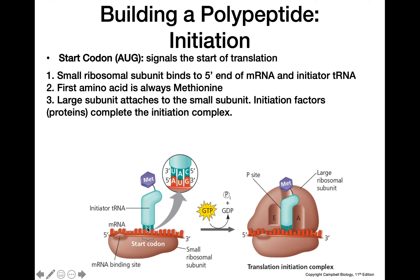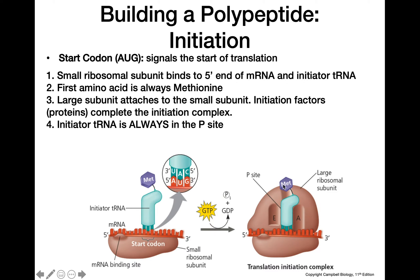After we have the initiator tRNA bound to the start codon, the large ribosomal subunit will come in and bind to the small subunit. We'll have several initiation factors that are going to help complete this initiation complex. Once the large ribosomal subunit attaches, the initiator tRNA is always going to be in the P site. The first amino acid attached to this first tRNA is always going to be in the P site.